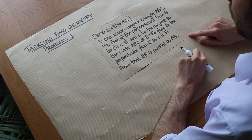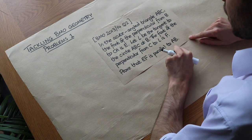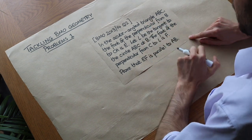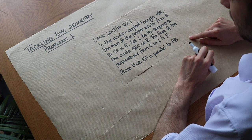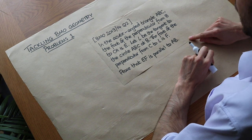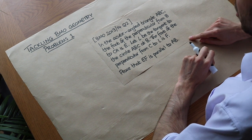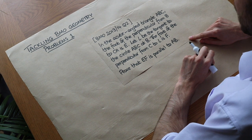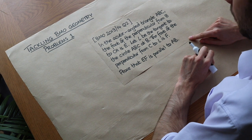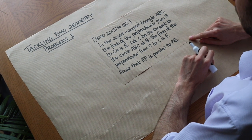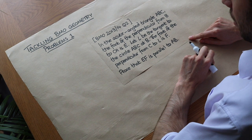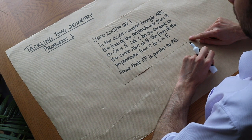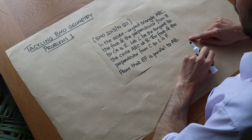So let's look at this particular problem. In the acute angle triangle ABC the foot of the perpendicular from B to CA is E. Let L be the tangent to the circle ABC at B. The foot of the perpendicular from C to L is F. Prove that EF is parallel to AB.